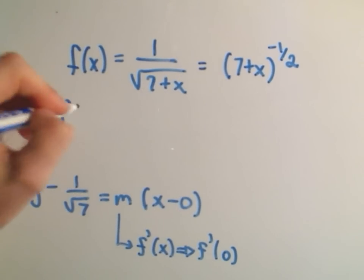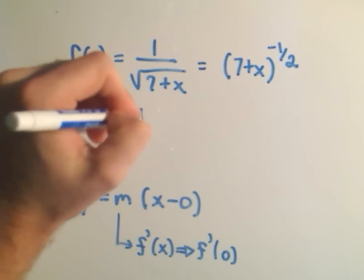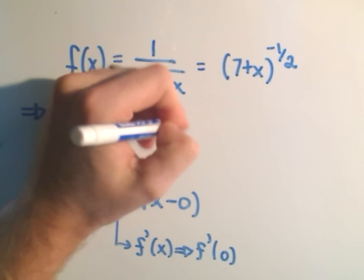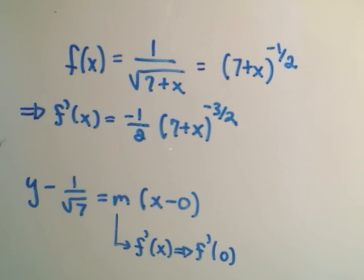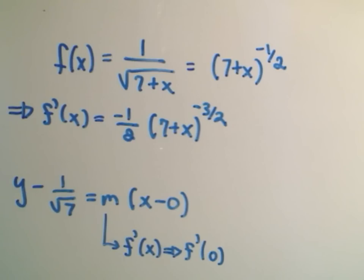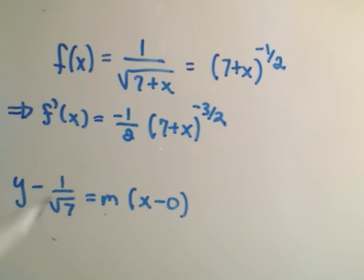The derivative is going to be negative 1 half, 7 plus x to the negative 3 halves. And if you multiply by the derivative of the inside, you'll just get 1. Okay, no dx dt. We're not doing any of that stuff anymore at this point.